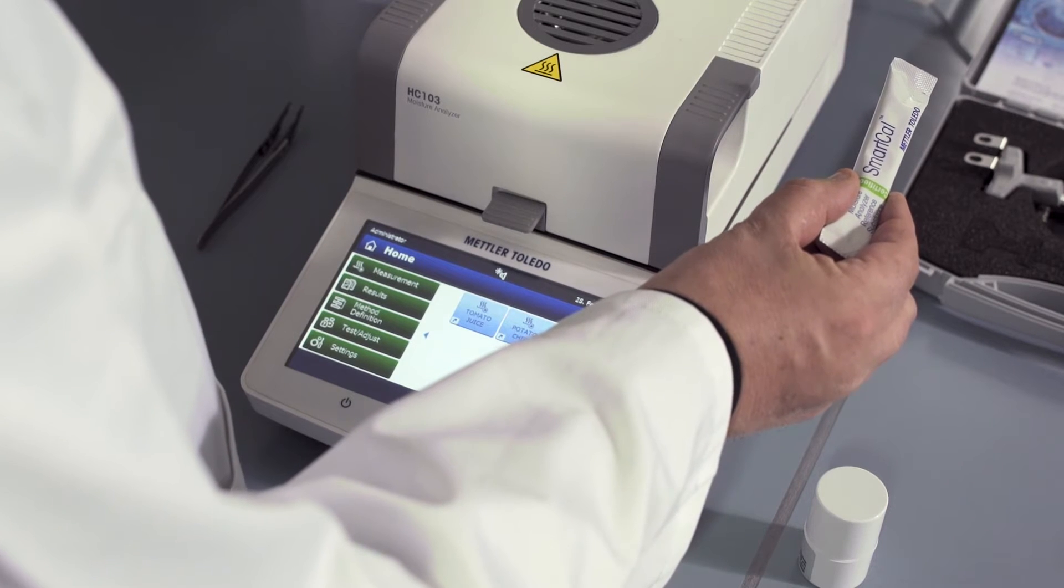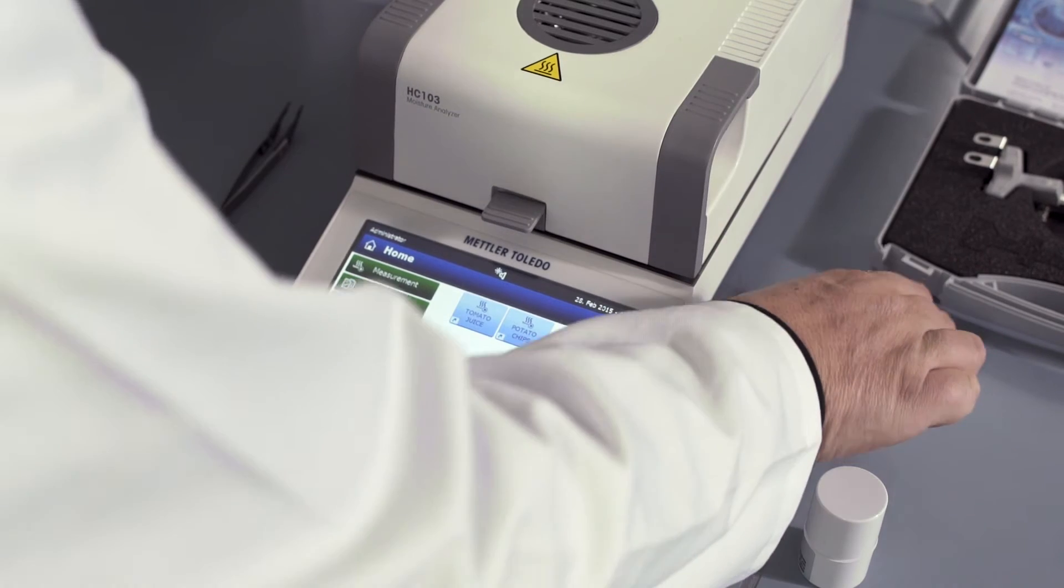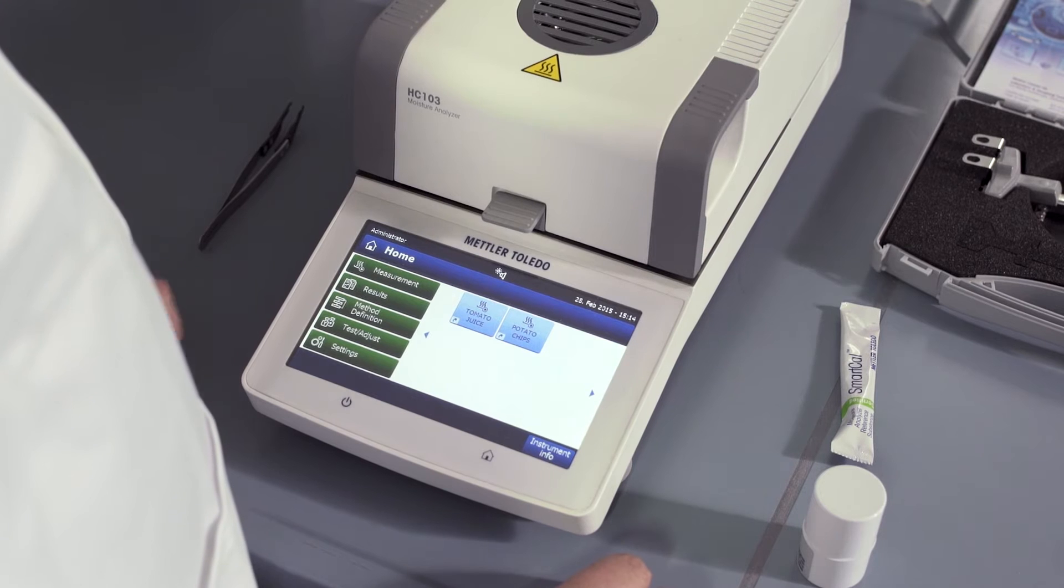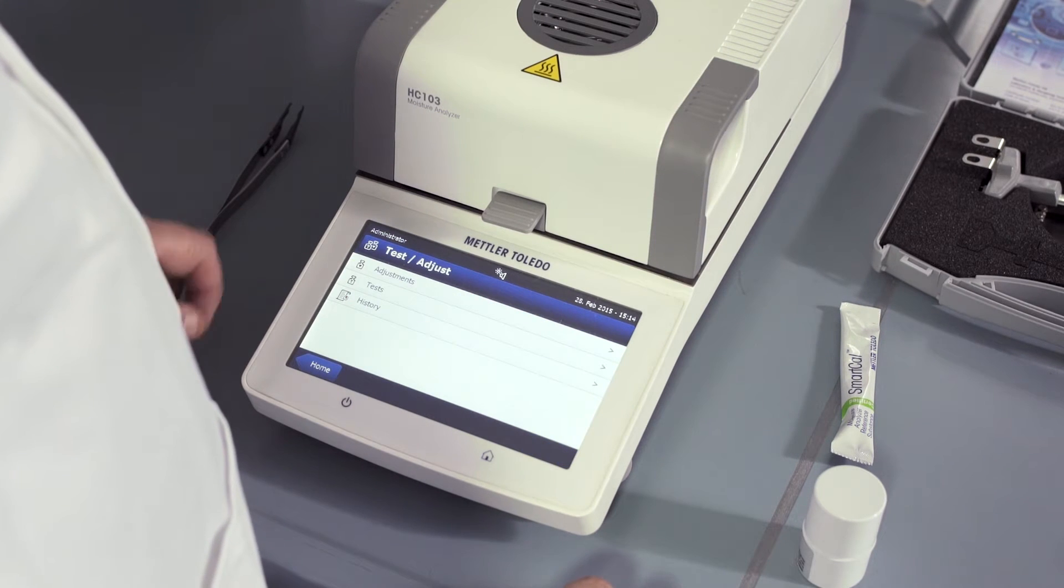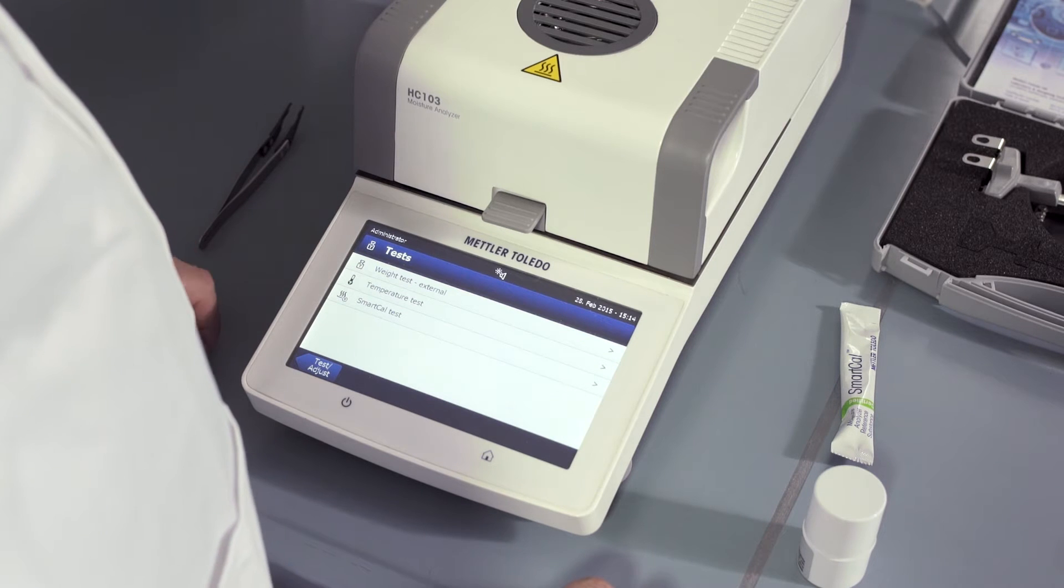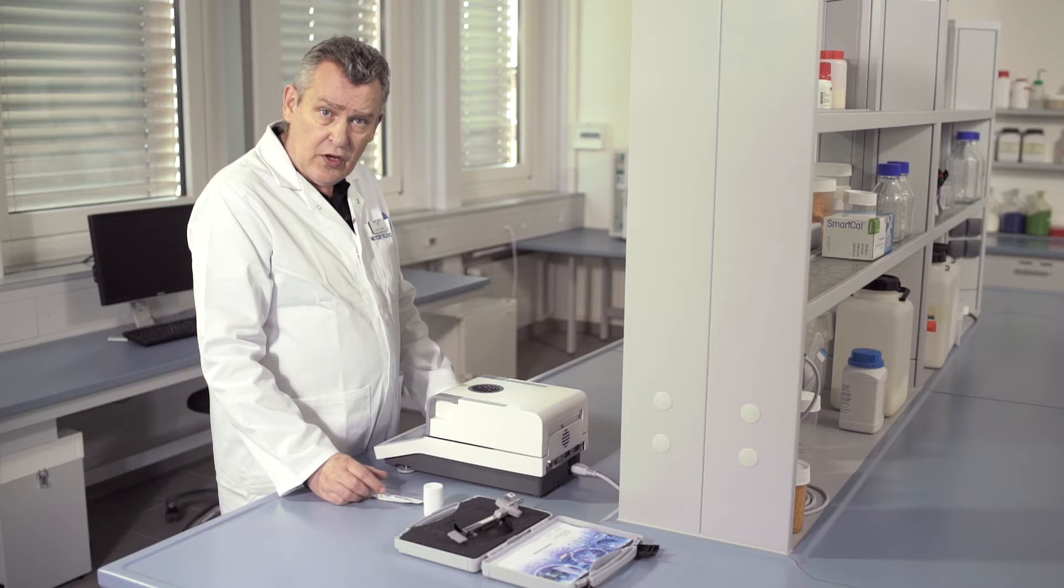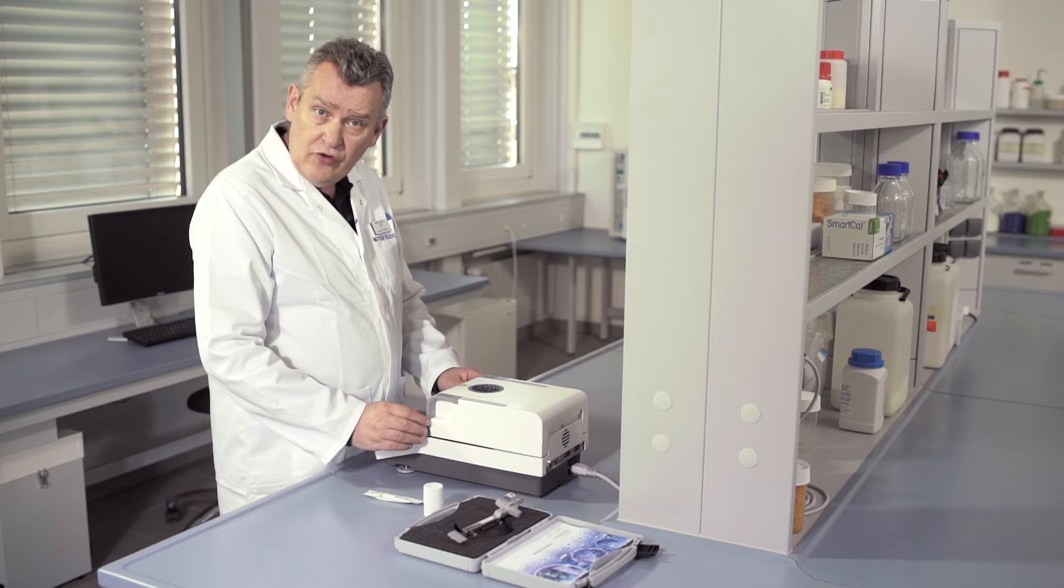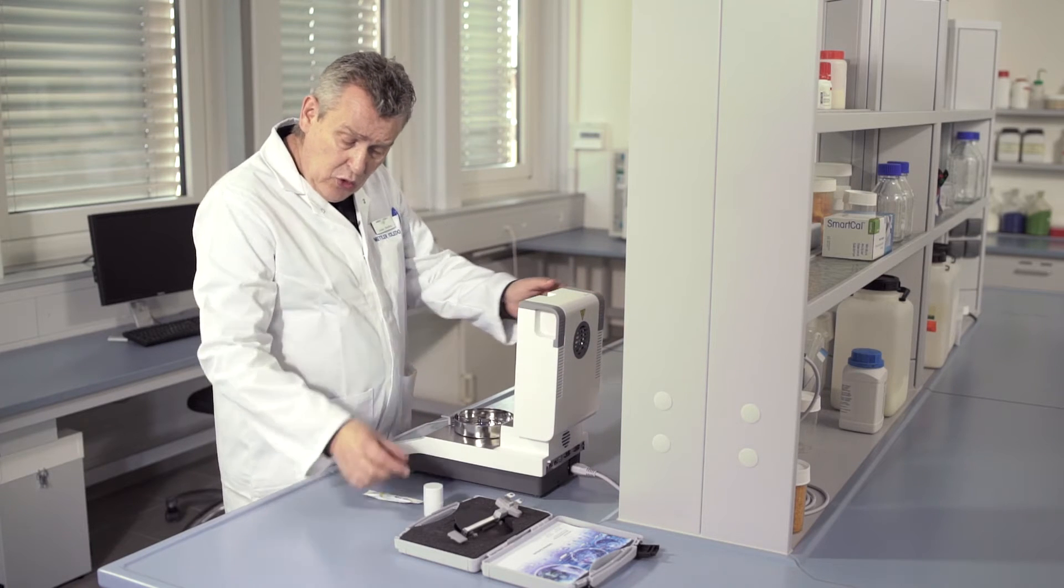To test the weighing unit, press the test adjust button, then press tests and select weight test external and start the test. The instrument instructs you to place a 100 gram weight on the weighing pan and then to remove the weight. After removal of the weight, the test procedure is now finished.